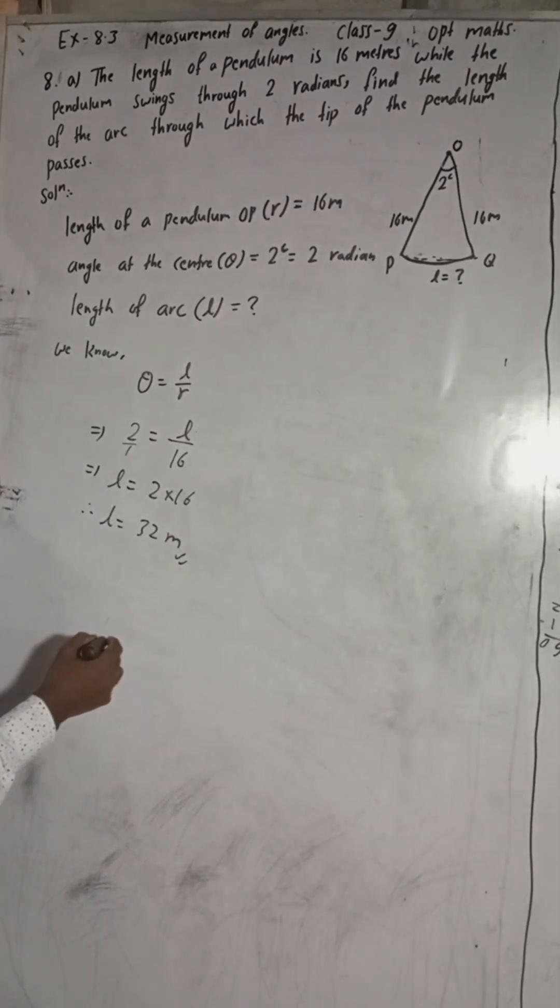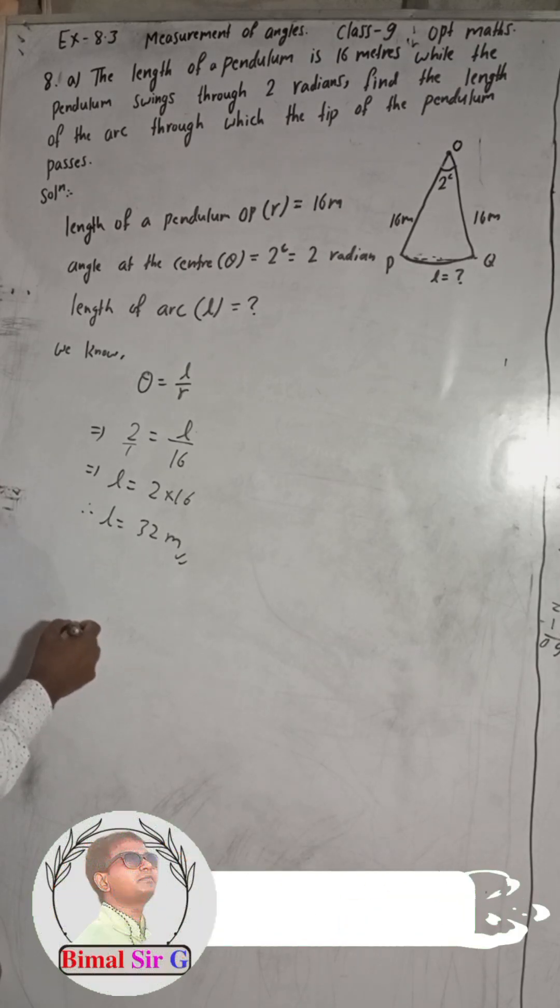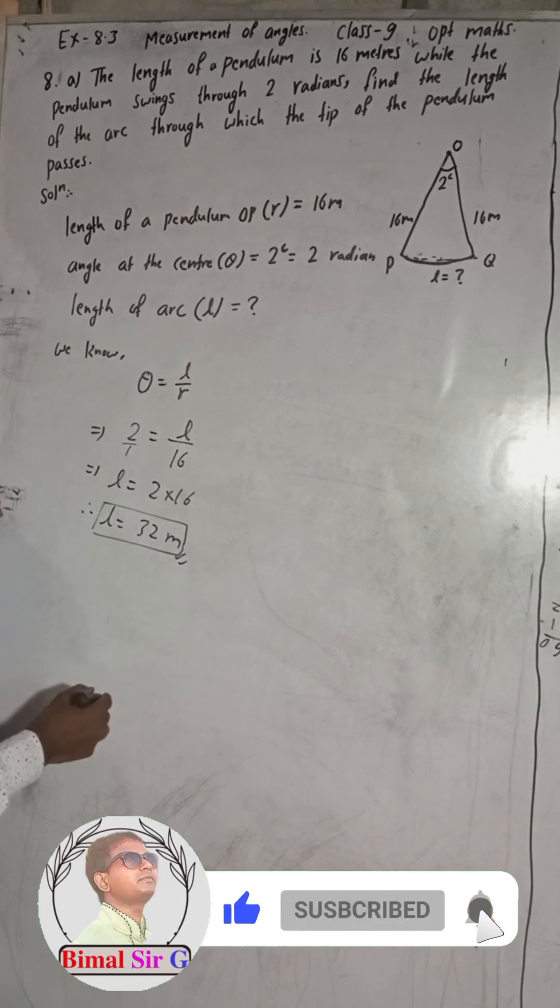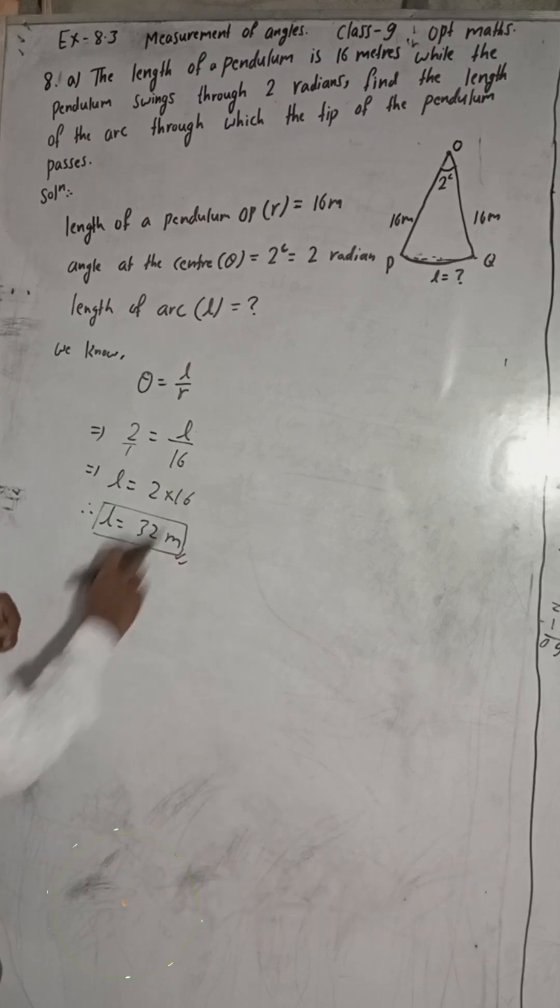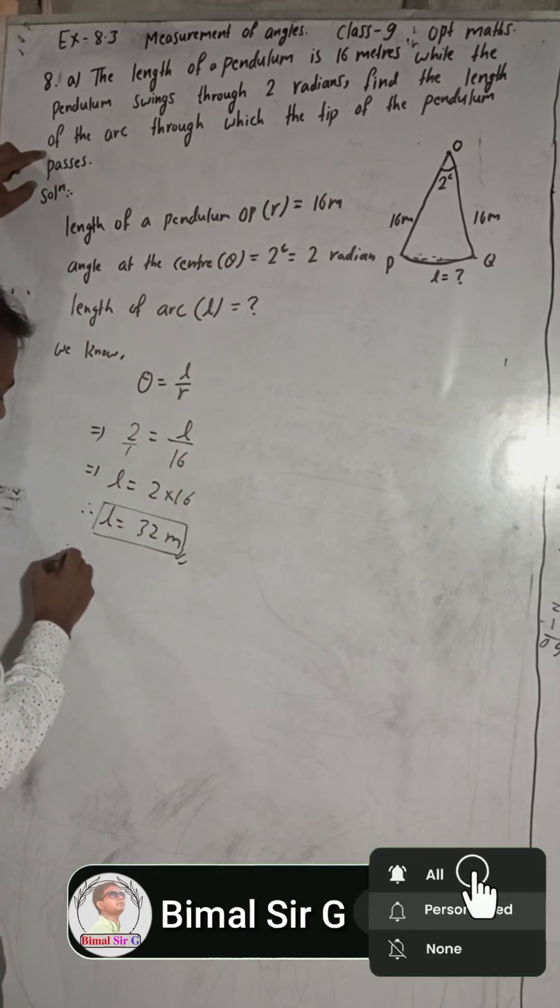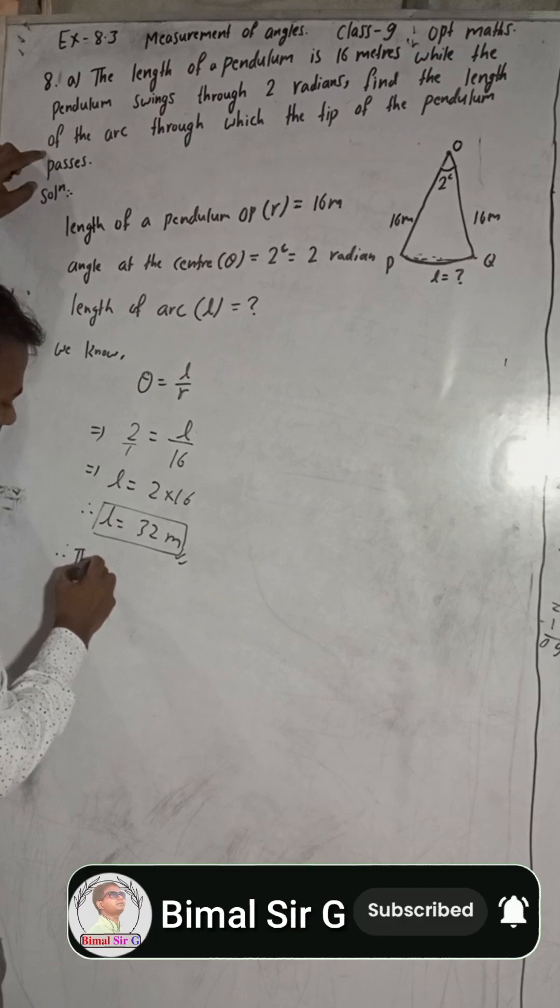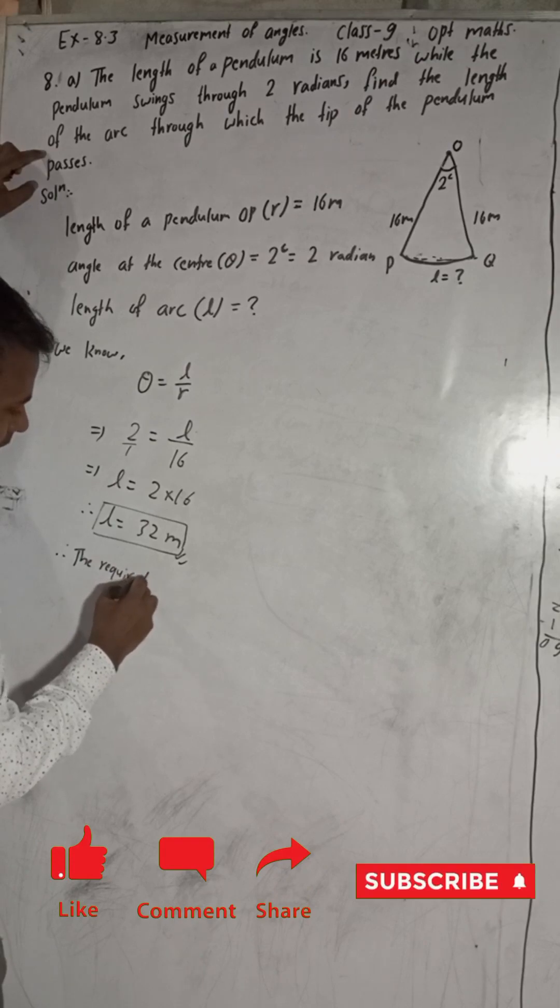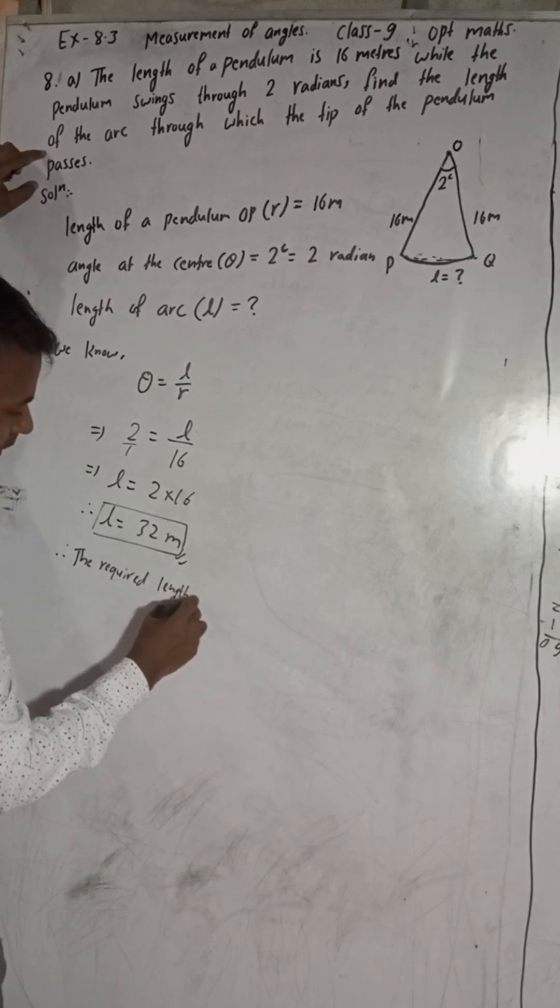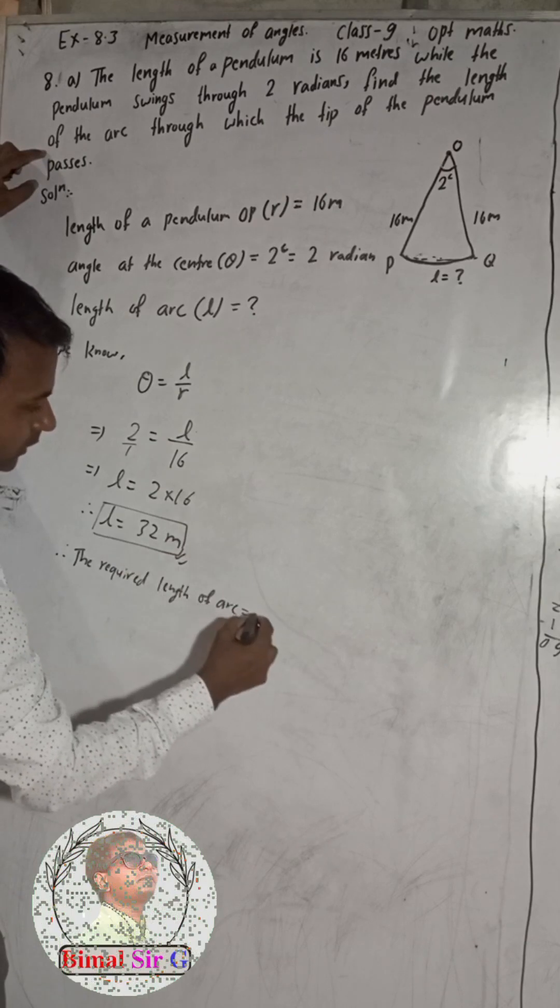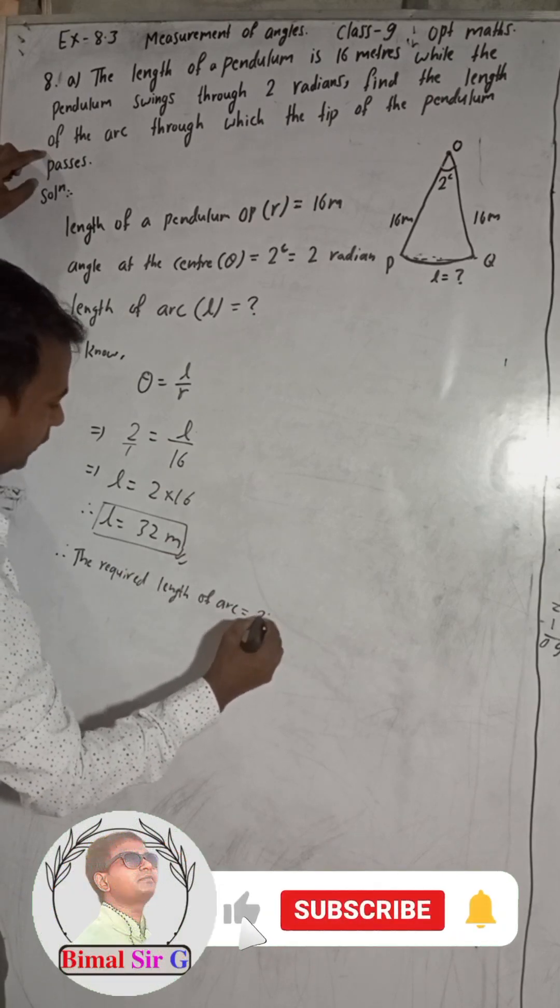So this is the complete solution. If you have any doubts, you can write there: find the length of the arc. Therefore, the required length of the arc is 32 meters.